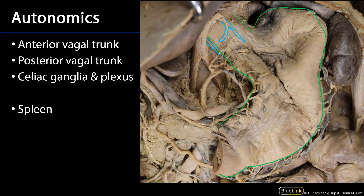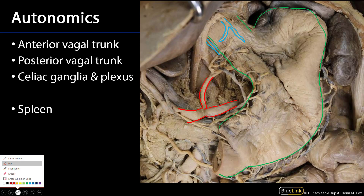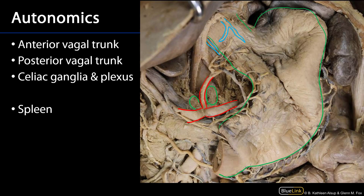Those vagal trunks are heading down towards the celiac plexus. Here, outlined in red, are the branches of the celiac trunk: the splenic artery, the left gastric artery, and the common hepatic artery — all arising like a beautiful flower. There is a perivascular plexus associated with the celiac trunk. Flanking here is one of two celiac ganglia. These ganglia are preaortic ganglia into which the thoracic splanchnic nerves come and synapse, and fibers from the posterior vagal trunk also run through there, then distributed along the perivascular plexuses out towards target organs.